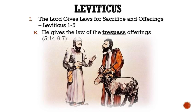Letter E: He gives the law of the trespass offerings. This offering could also include sins of ignorance as in the sin offering, but the difference was that these sins pertained to one directly against the Lord or against others, and the offender could offer restitution. The sacrifice to be given was a ram without blemish, but the method for sacrifice is not going to be detailed until chapter 7, where we find out that they are actually the same as the sin offering.